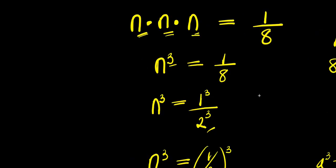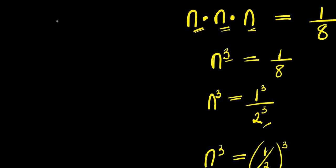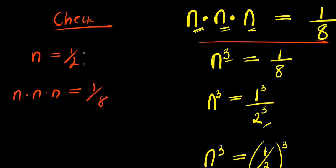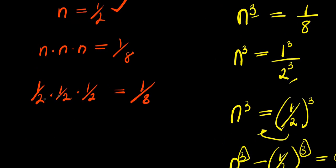We can verify by checking n equals 1 over 2. Substituting into n times n times n: 1 over 2 times 1 over 2 times 1 over 2 equals 1 times 1 times 1 divided by 2 times 2 times 2, which is 1 over 8. That matches the original equation, so the solution is correct.